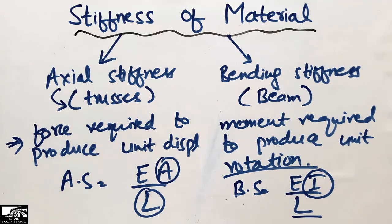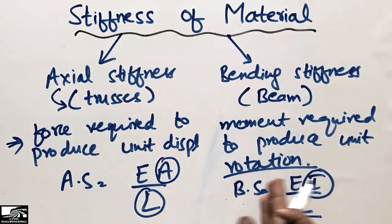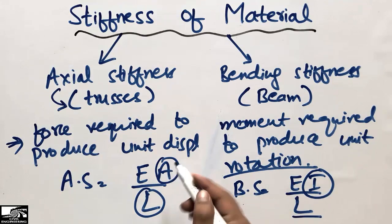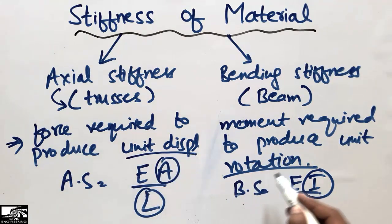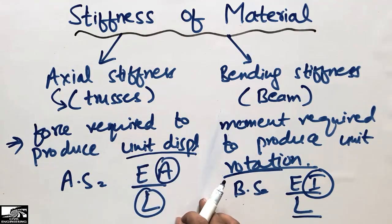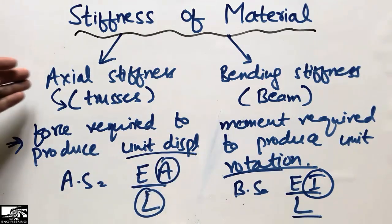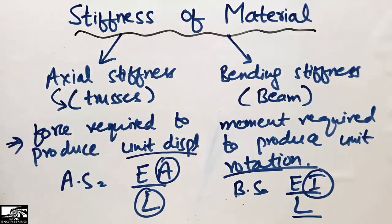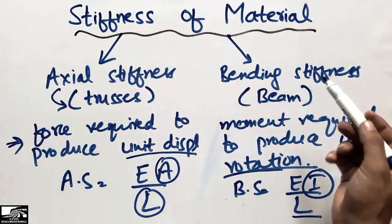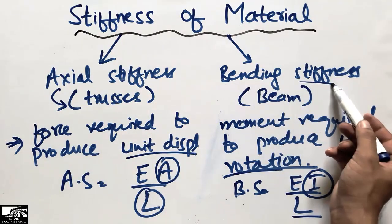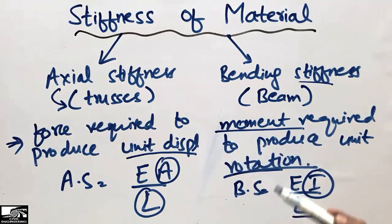So in both cases there is unit displacement and unit rotation respectively. In the case of axial stiffness, we have force required to produce unit displacement, while in the case of bending stiffness, we have a moment required to produce unit rotation.